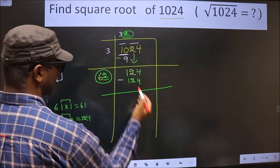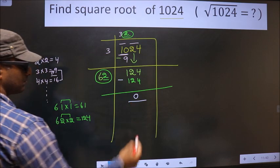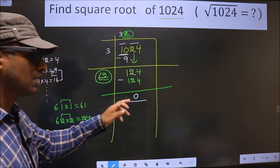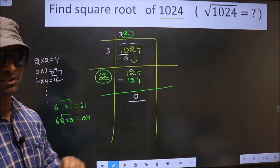Now you subtract. 124 minus 124 is 0. So we got 0. That means given number is a perfect square.